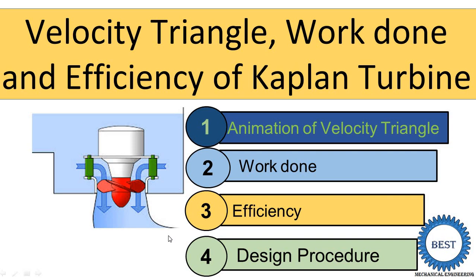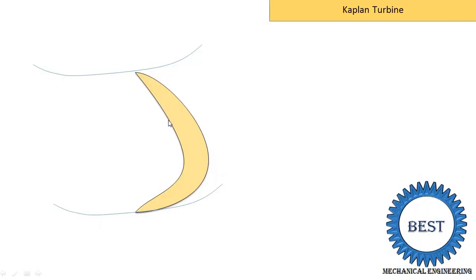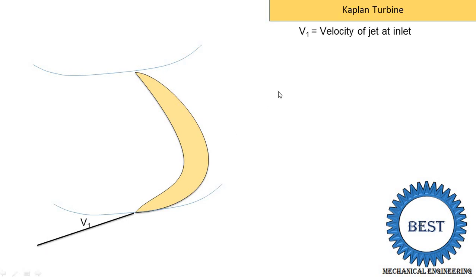I hope you know the basics of Kaplan turbine. If you don't know, then watch the introduction of Kaplan turbine — its construction and working from the playlist. So this is the blade of the Kaplan turbine. It has an outer diameter and an inner diameter. Now, the water from the guide vanes comes with velocity V1, known as the velocity of the jet at the inlet of the runner, at angle alpha1 with the horizontal direction. Means the guide vane angle is alpha1.